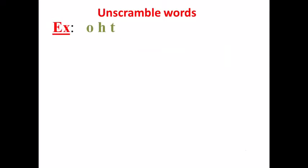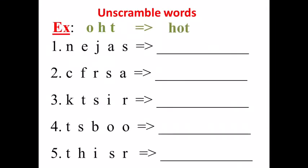Example, ở ví dụ người ta cho con từ chữ cái là O-H-T. Thì con nhìn con sẽ sắp xếp được chữ gì nè con? Rất dễ dàng chúng ta sắp xếp được chữ HOT. Và đây là 5 chữ. Đây là 5 chữ mà ở bài trước mình đã học rồi.